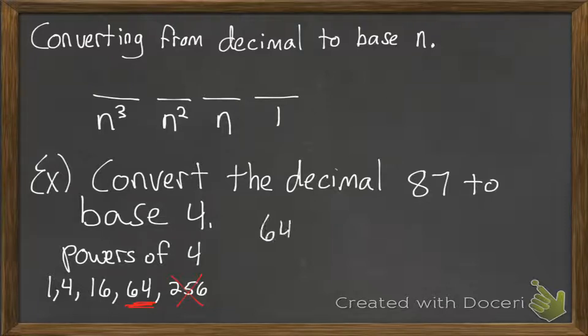So 64 will go into 87 only one time. We use long division here. We have 23 left over. Hang on to that one. That's how many sixty-fours we need. We now move to our next place value, which is 16.